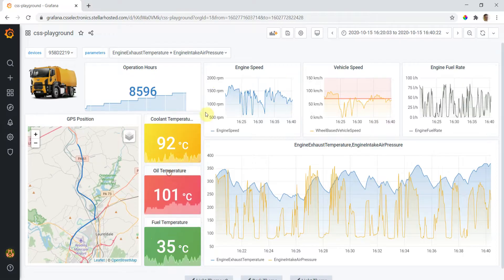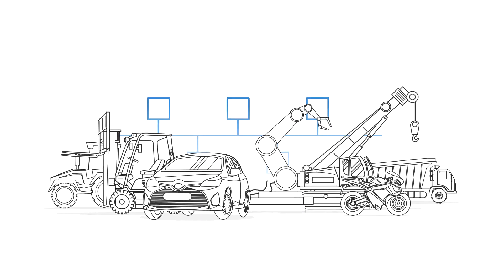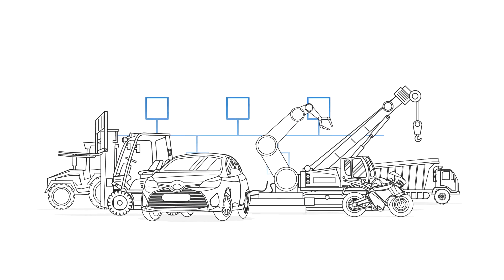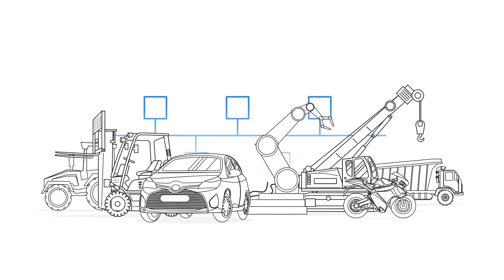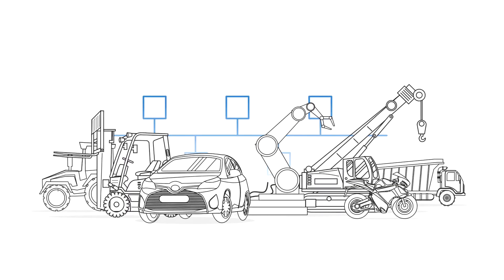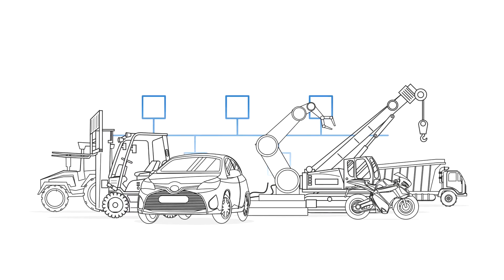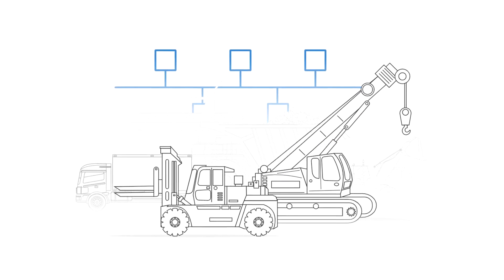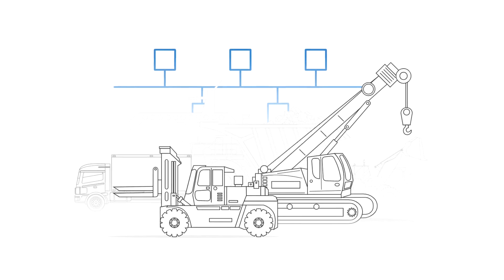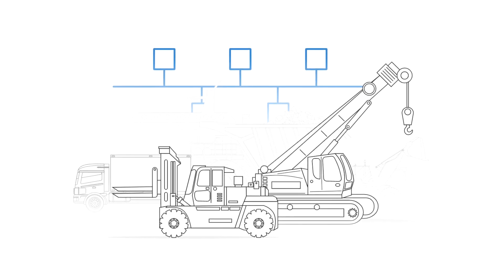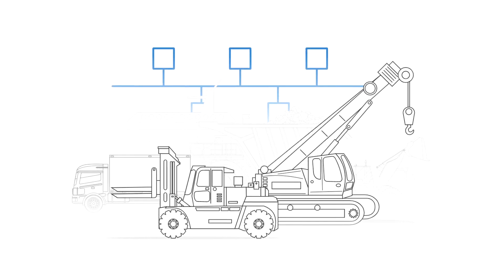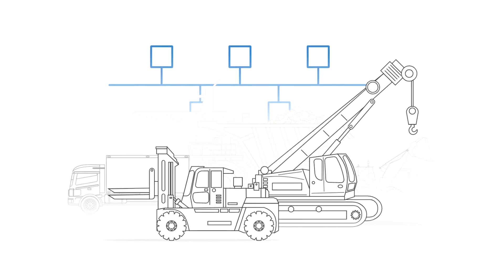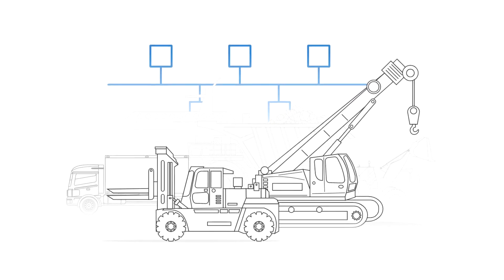Let's start with the basics. Today, CAN-BUS is used in the vast majority of vehicles. J1939 is a standard based on CAN-BUS and is today used in the majority of heavy-duty vehicles, including trucks, transit buses, tractors, excavators, etc.